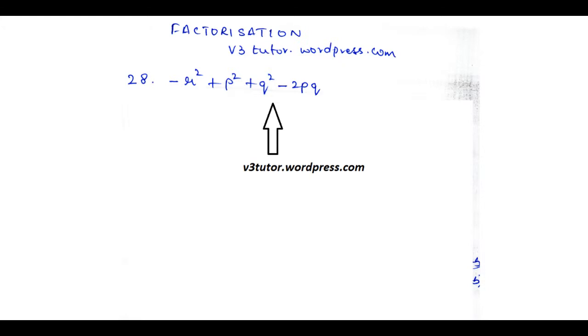The problem is minus R squared plus P squared plus Q squared minus 2PQ. Now when you get such a problem, when there are four terms, you see if you can group it.